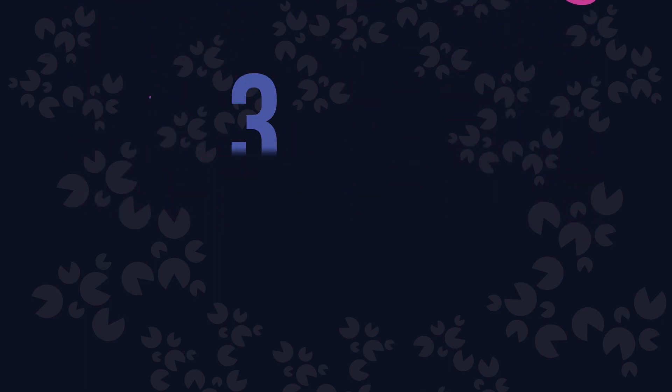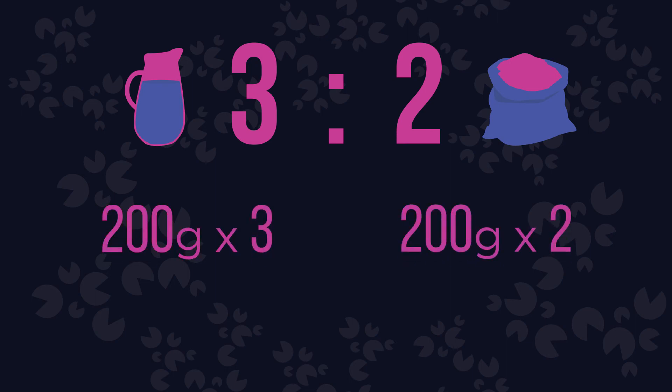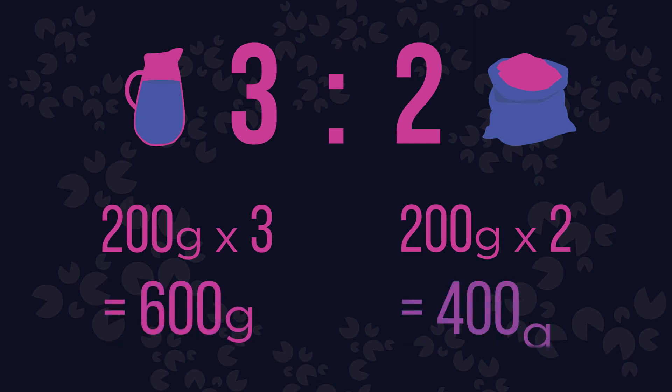Using our ratio of three to two, we must multiply our weight by three to get the amount of water, and multiply by two to get the amount of flour. In total, we have three times 200 of water and two times 200 of flour, giving us 600 grams of water to 400 grams of flour.